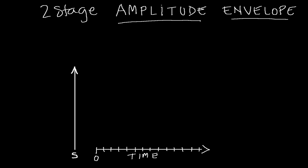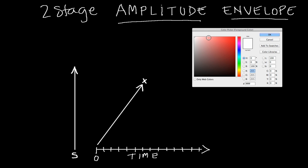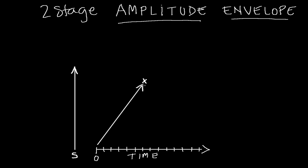But if we have a less steep attack angle, it takes more time for the sound to attack up to its loudest peak because the angle isn't so steep. With this slower attack — a less steep angle to rise up to its peak from silence — it's now taking six tenths of a second. So the steepness of the angle tells us how fast it's attacking from silence to its loudest peak.